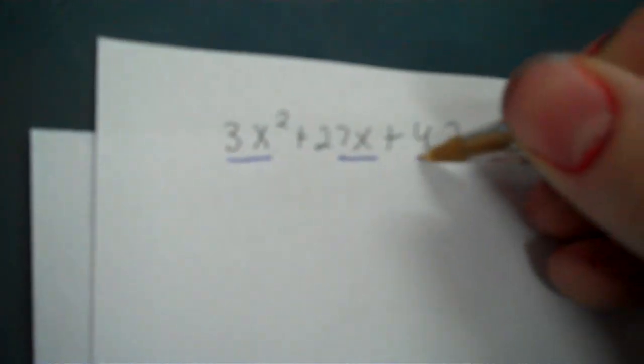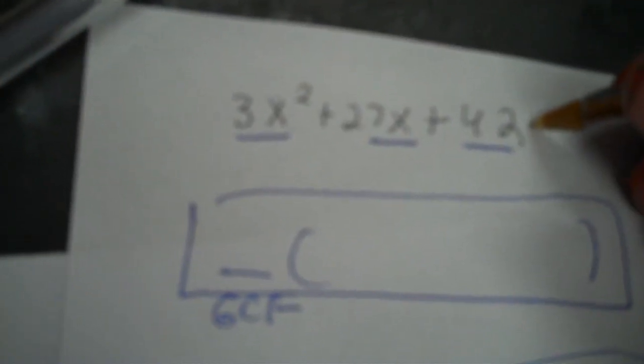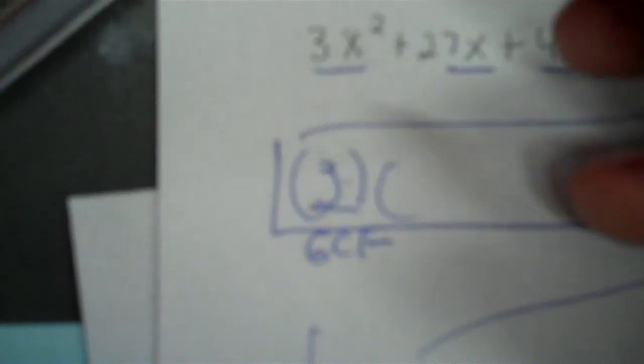Next problem: 3x squared plus 27x plus 42. There are three terms, so we use GCF with the table. There's no x in the last slot, so don't write x there. There's no negative in the front slot. The numbers 3, 27, and 42 are all in row 3. Whatever's in the GCF parentheses is what we divide by.